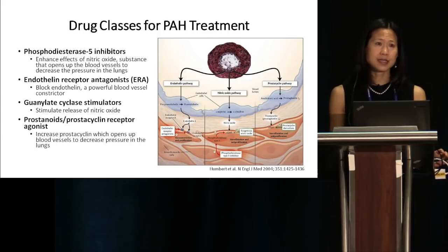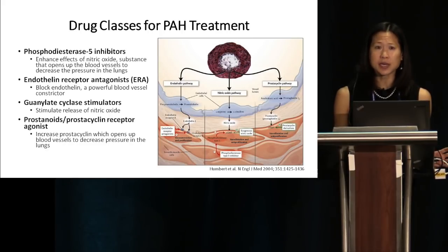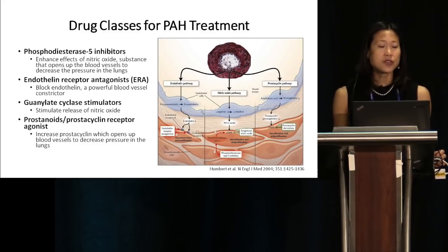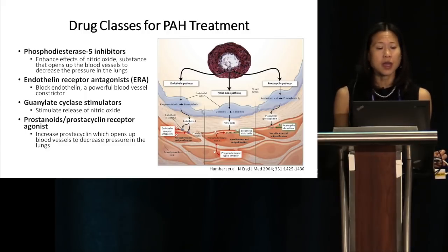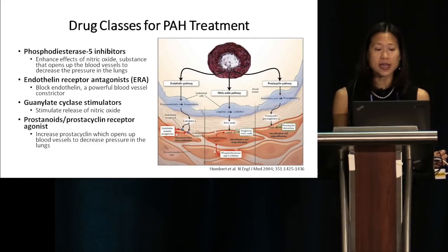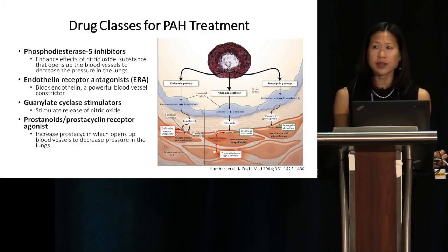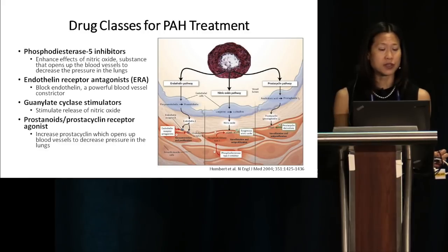There are four major drug classes for PAH treatment, working on three pathways. Phosphodiesterase-5 inhibitors enhance the effects of nitric oxide, which opens blood vessels and decreases lung pressure. Endothelin receptor antagonists block endothelin-1, a powerful vasoconstrictor, leading to vessel relaxation. Guanylate cyclase stimulators stimulate release of nitric oxide. Prostanoids or prostacyclin receptor agonists work on the prostacyclin pathway, with prostacyclins opening blood vessels and decreasing lung pressure.